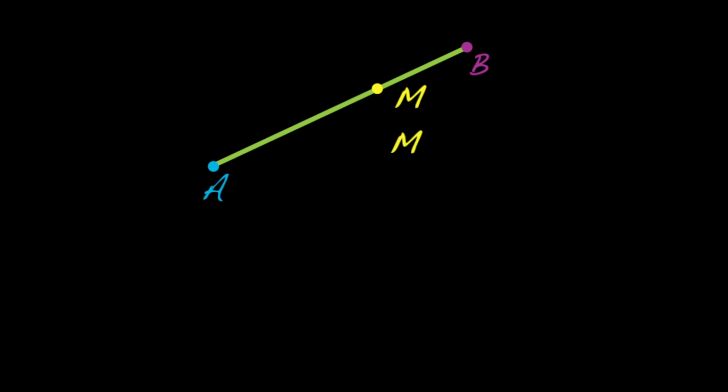So the algebra would say that M is one copy of A plus two copies of B. And then I have to divide by three for this to be a proper average. And I can write that a little bit simpler as A plus 2B over three.